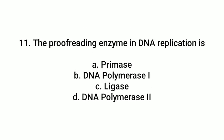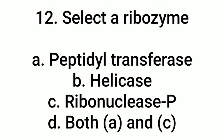Question number 11: The proofreading enzyme in DNA replication is A, primase. B, DNA polymerase I. C, lyase. D, DNA polymerase I. Answer is B — DNA polymerase I. Question number 12: Select ribosomes — A, peptidyl transferase. B, helicase. C, ribonucleotides. D, both A and C. Answer: A — peptidyl transferase and C — ribonucleotides.